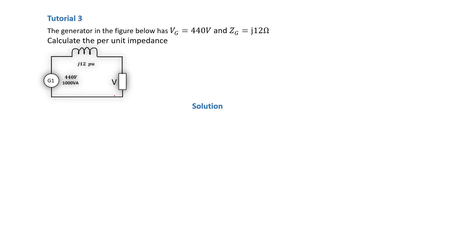This tutorial is asking us to calculate the per unit impedance, so we must not confuse the internal impedance with the per unit impedance—they're two different things. The internal impedance is basically the internal resistance, while the per unit impedance will be the representation in per unit form.